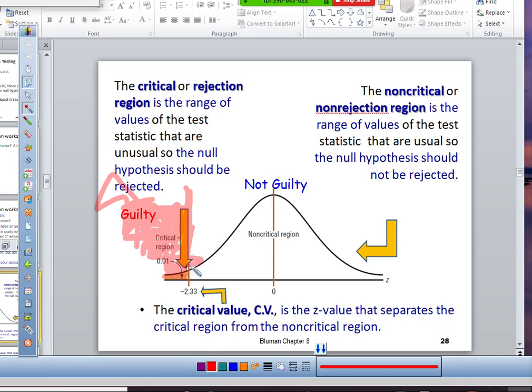This line right here, I should make it red instead, this line right here is called a critical value. It's the line that you have to pass, that you have to be beyond in order to be considered unusual. If your z-score is beyond this, if your z-score is bigger than this or beyond this, then you're guilty.